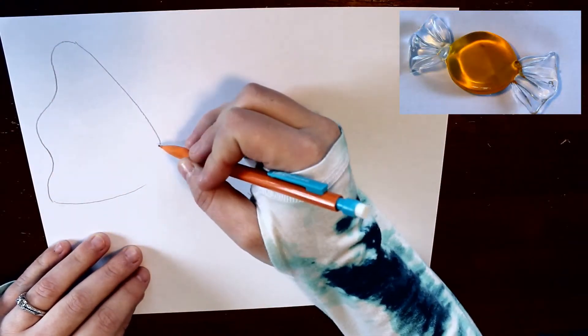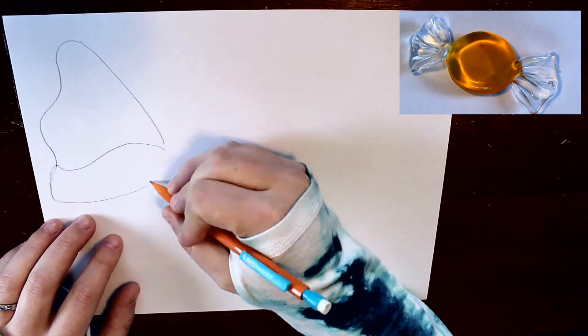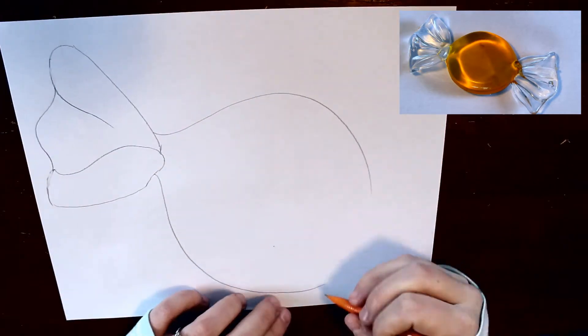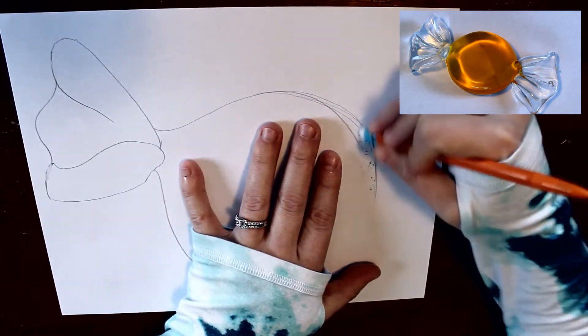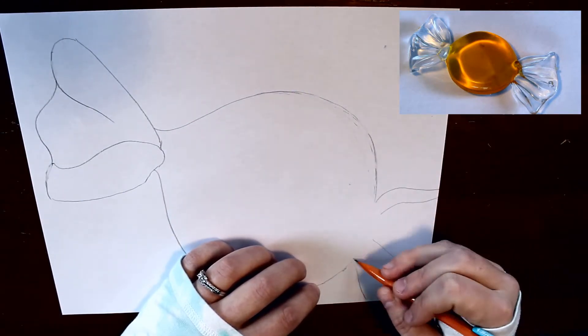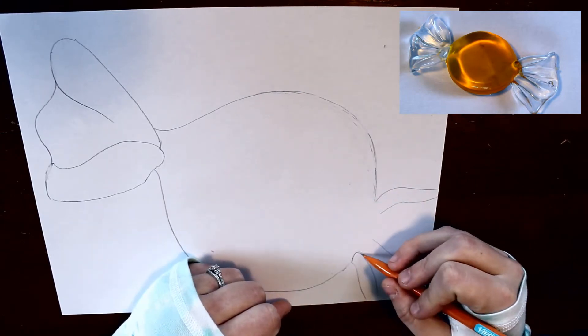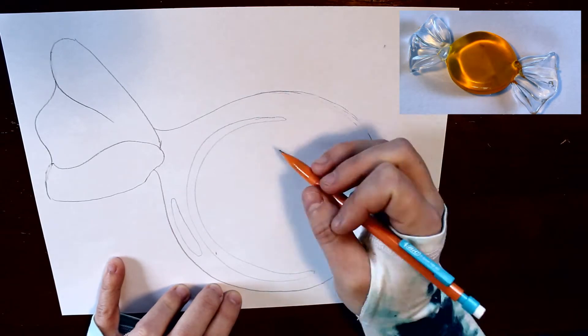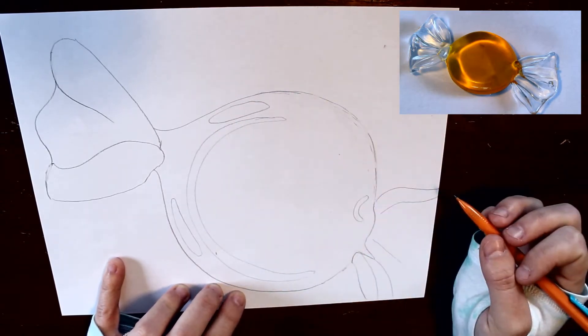When you're drawing your still life object, it's important to not only have it be really big but to really notice the little details that are inside of it. I noticed inside of my little candy piece here that there are a bunch of folds and different colors throughout it. So when I was drawing, I decided to draw the different folds and to draw shapes where the colors are changing.